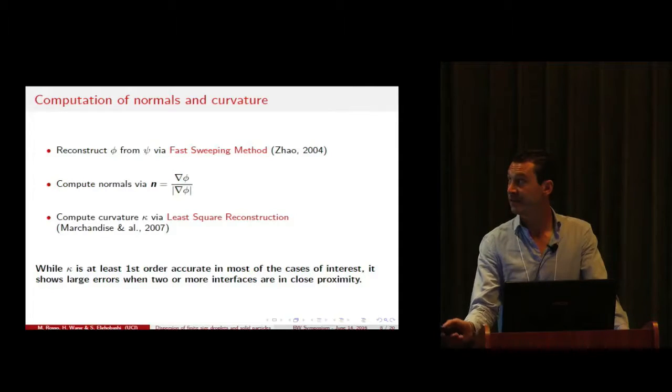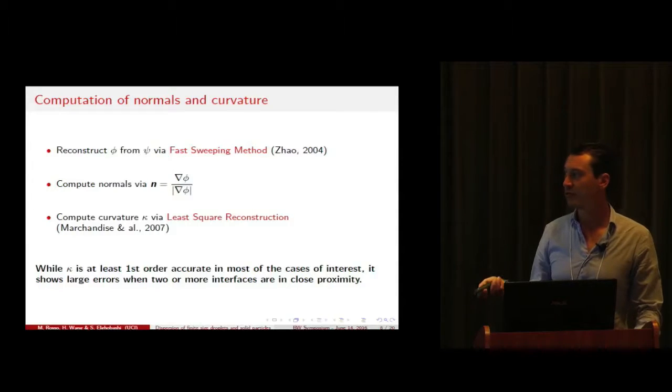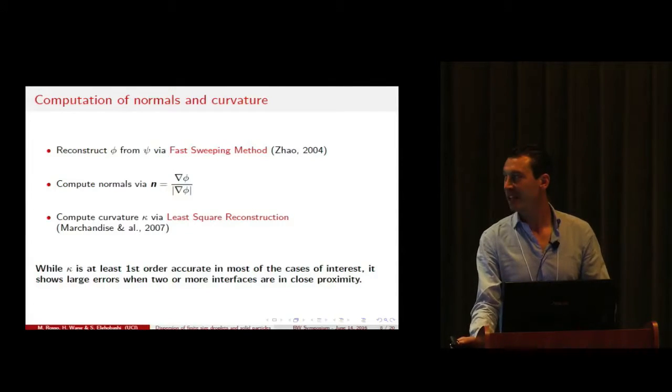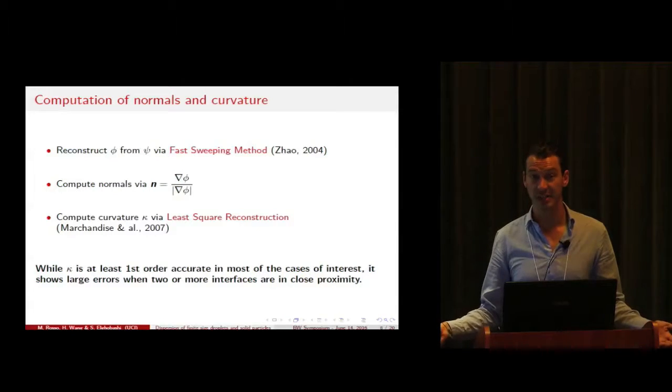Then from this signed distance function we compute the normals by using standard differentiation, and finally via least squares reconstruction we compute the curvature k. We are able to obtain a method that is more than first order accurate for the curvature in most cases of interest.